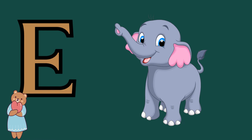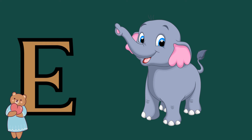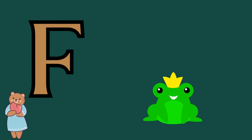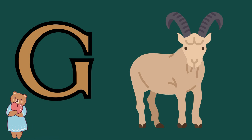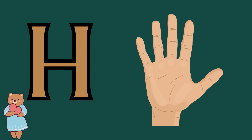E is for elephant, e-e-elephant. F is for frog, f-f-frog. G is for goat, g-g-goat. H is for hand, ha-ha-hand.